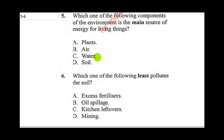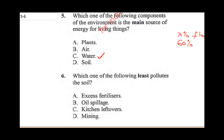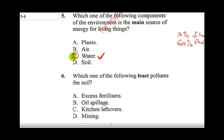The answer is water. Every animal's body is made up of over 70 percent water, and the same applies to plants — squeeze a plant and you get over 60 percent water. That is why the main source of energy is water and not air. So the correct answer for question five is C.